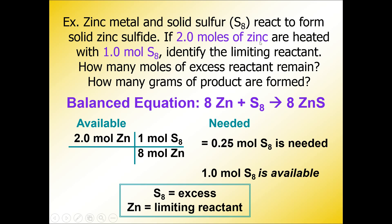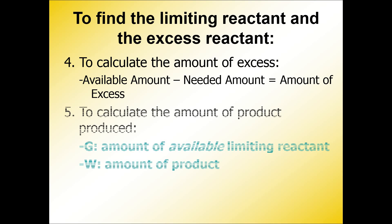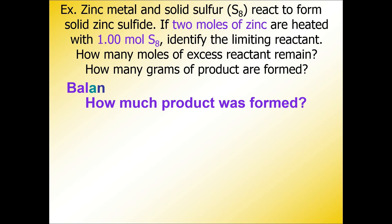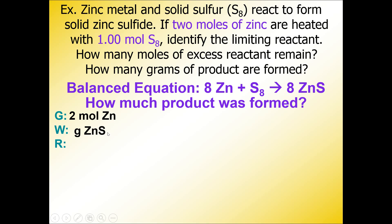Here's how to calculate the amount of product. You need to start off with the amount of available limiting reactant and do a GWR calculation. The given is the amount of available limiting reactant. The want is grams of zinc sulfide. The relationship is going to be between these two substances: zinc and ZnS. There are eight moles of zinc and eight moles of ZnS, which means we have an eight moles of zinc to eight moles of ZnS ratio.